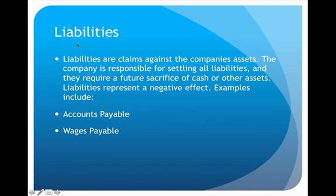The next category is liabilities, which are almost like the opposite of assets. Liabilities are actually negative — they represent debts or things that we are responsible for, and they have a negative effect on the business. Common examples include accounts payable and wages payable. The key characteristic is that every liability will ultimately require some type of sacrifice — in the future we'll have to pay money, provide a service, or provide a product to settle that debt.